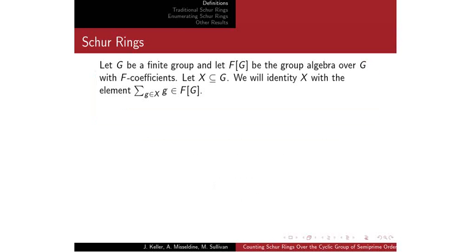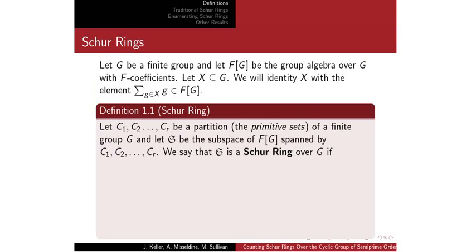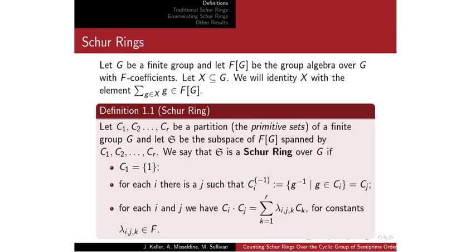So first off, what is a Schur ring? For some finite group G and the group algebra over G with coefficients from the field F, we define elements from X by sums of elements in that group algebra. For some partition of primitive sets of the finite group G, let S be the subspace of the group algebra spanned by these simple quantities, and we say that S is a Schur ring if it fulfills these three conditions. First, the identity is in a partition by itself. The second condition basically forms quasi-group inverses over the ring, and the third condition basically guarantees that it is closed under multiplication of these simple quantities.